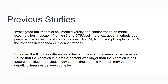We then screened the gene bank for differences in leaf and bean cadmium between cacao varieties. We also collected close to 200 soil samples from the gene bank and analyzed those for soil cadmium concentrations. What we found is that the differences in cadmium accumulation between varieties was larger than the variation in soil factors across the gene bank, suggesting that the differences in cadmium accumulation between varieties was largely due to genetic variation.